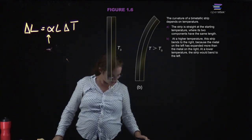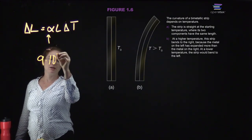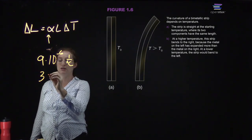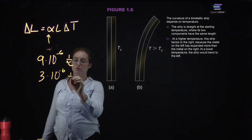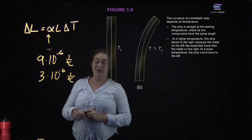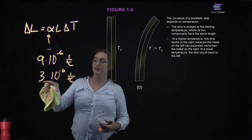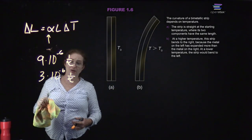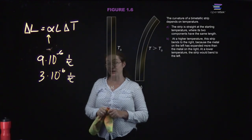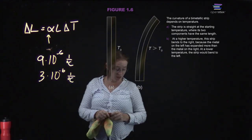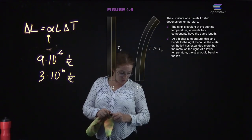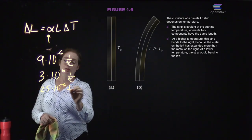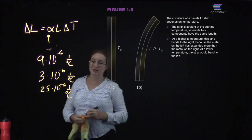For example, regular glass has a coefficient of linear expansion of 9 × 10⁻⁶ per degree Celsius, and tempered glass — like what you see in Pyrex cookware — is 3 × 10⁻⁶ per degree Celsius. So tempered glass has one-third the length expansion and contraction with temperature that regular glass does, which is what makes it less likely to break. Aluminum has a rather large coefficient of 25 × 10⁻⁶ per degree Celsius, so aluminum expands and contracts rather significantly with temperature.